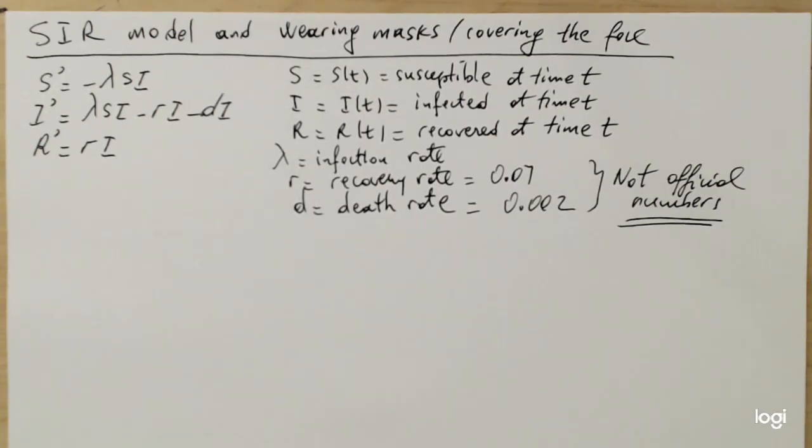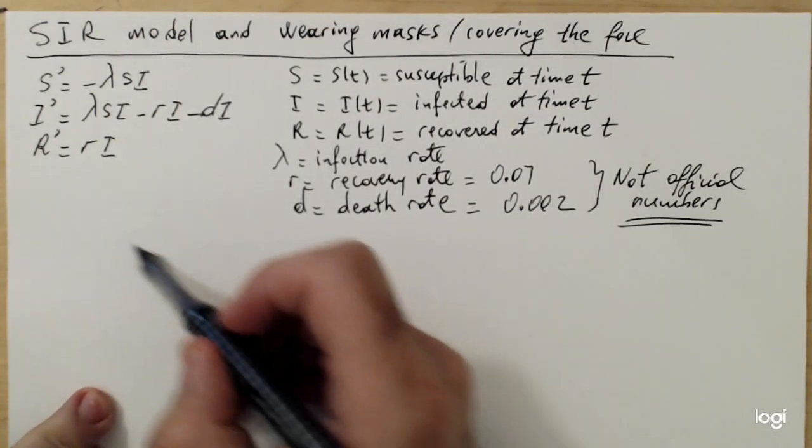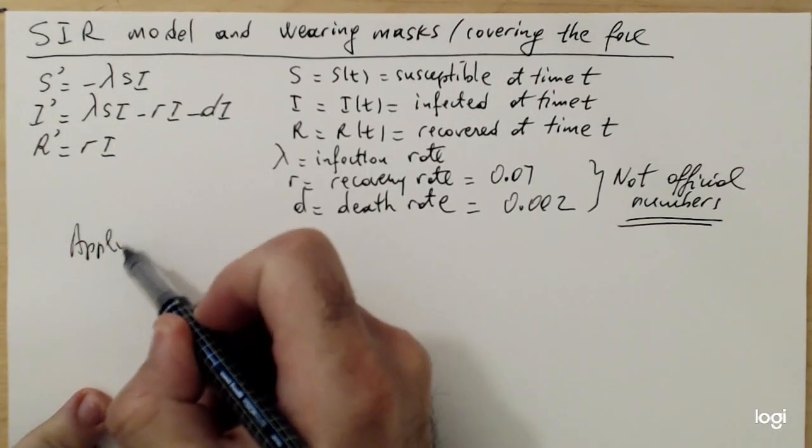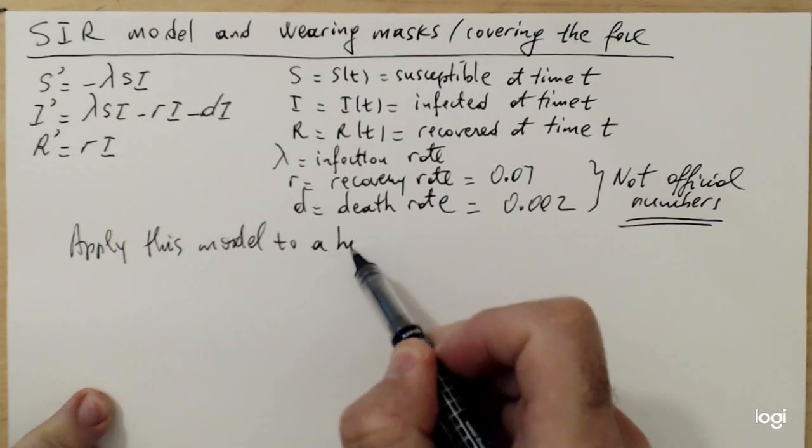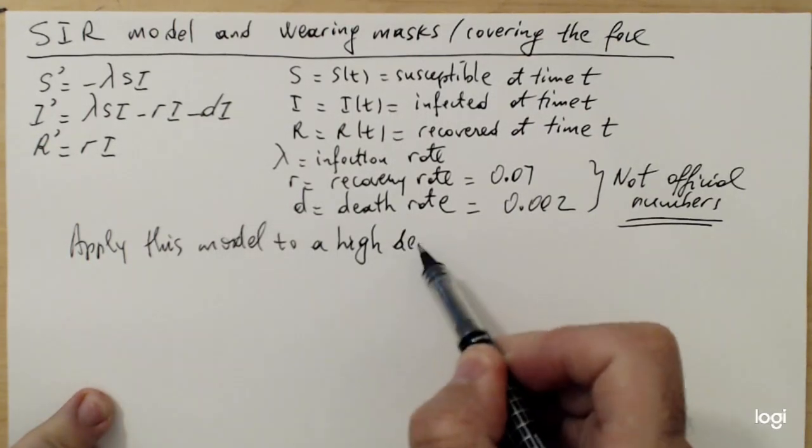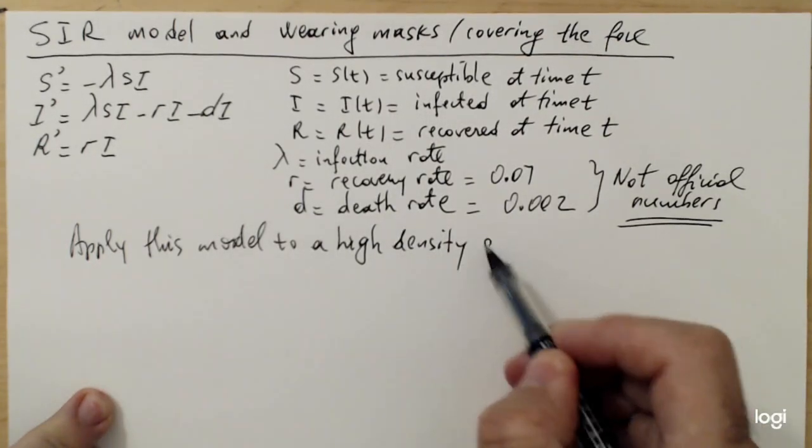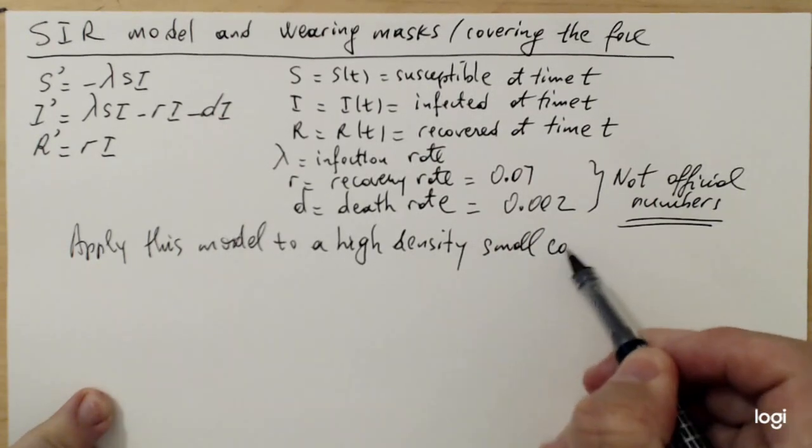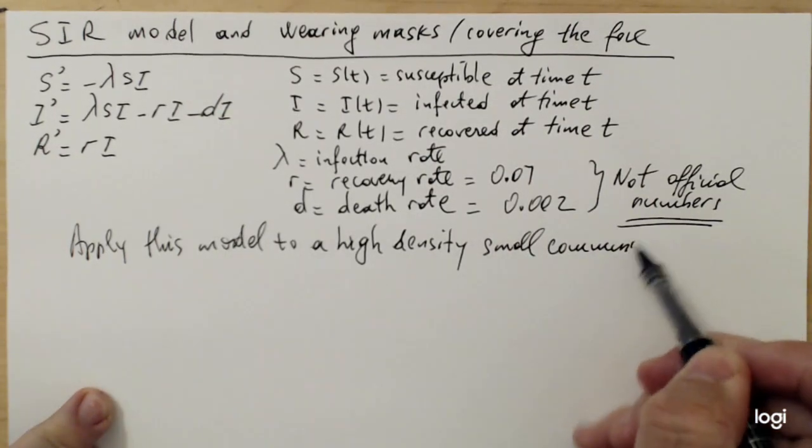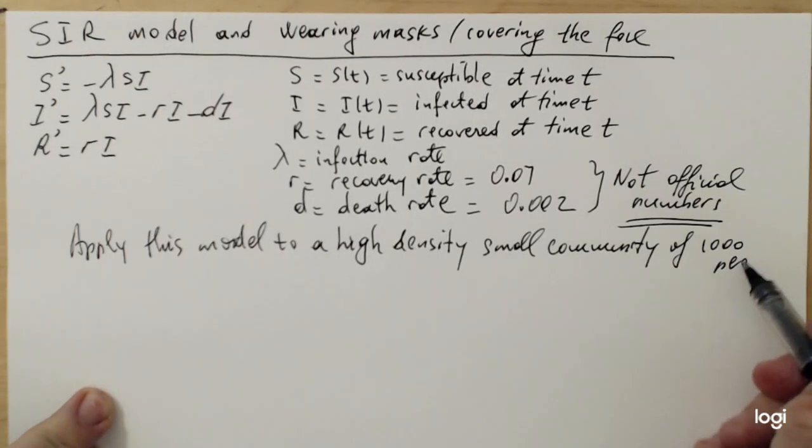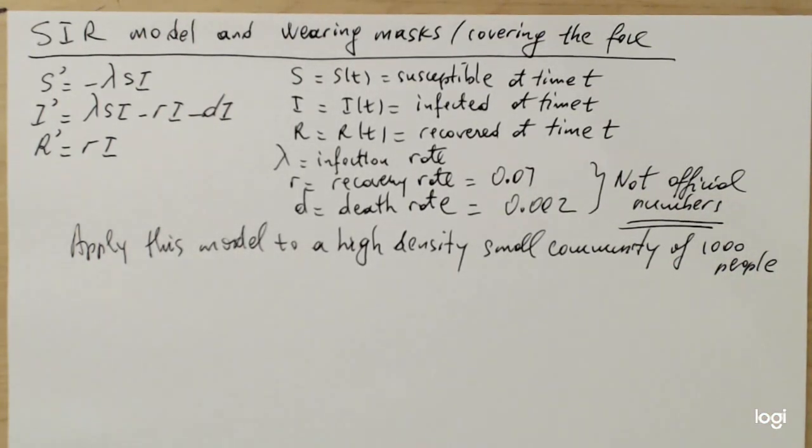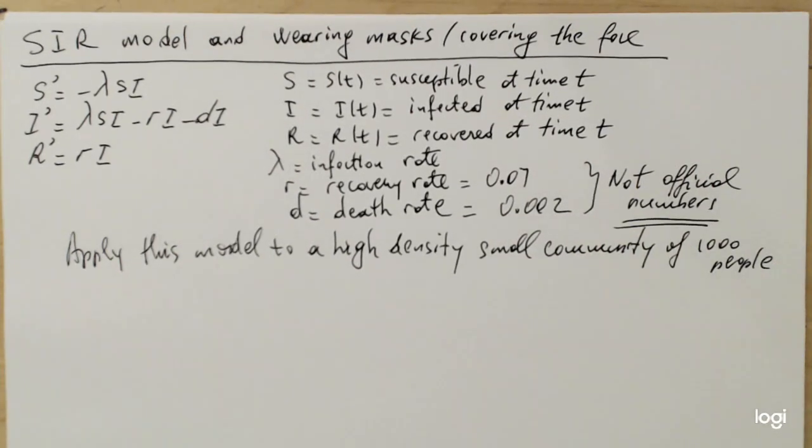And to simplify the discussion, suppose that I'm going to apply this model to a high density, small community of 1,000 people. Think of it as a dorm or a small college where people are very well mixed and then there is an equal probability of meeting either of them in a given day.